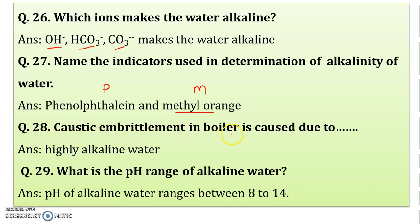Caustic embrittlement in a boiler is caused when the water used in the boiler is highly alkaline in nature. What caustic embrittlement is, we have seen in our theory class. Remember, caustic embrittlement is caused due to highly alkaline water if it is used in the boiler.